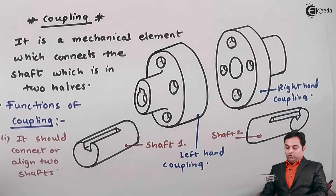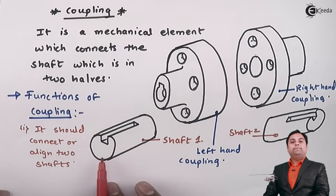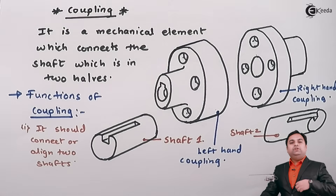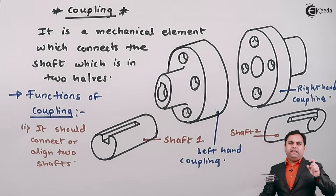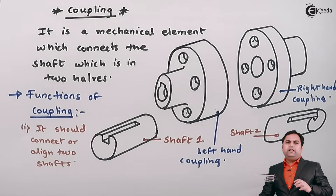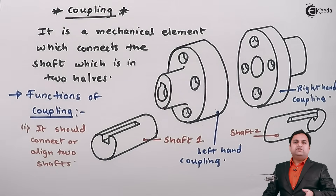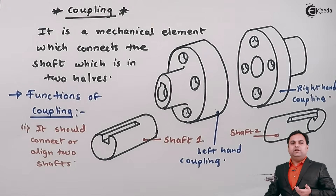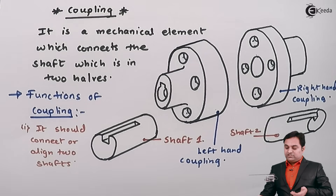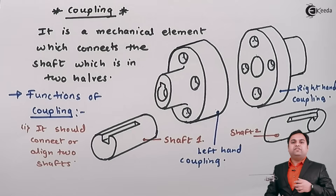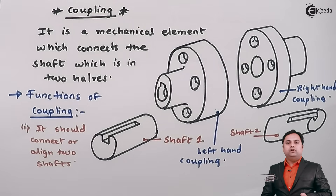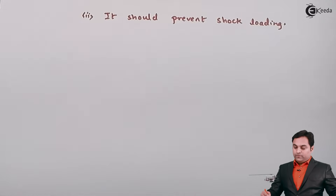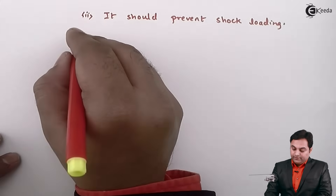The meaning of shock loading is that when power is given to one shaft and transmitted to the other, the second shaft should not suddenly start rotating — it should attain speed gradually. If it starts with a shock load, there are chances of shearing or breaking of the shaft. So the coupling should prevent shock loading.